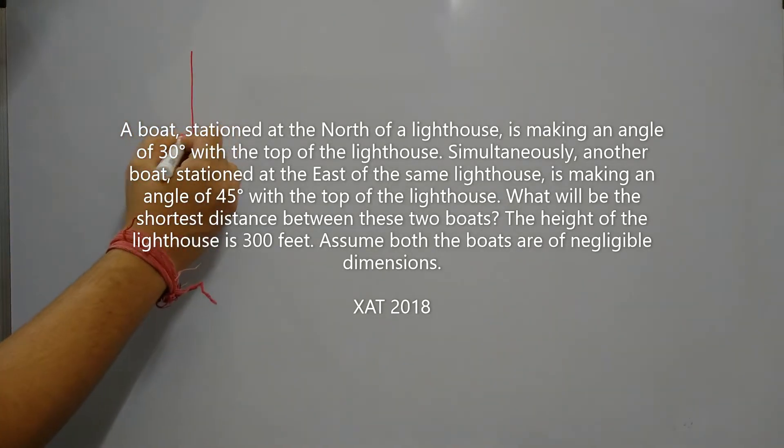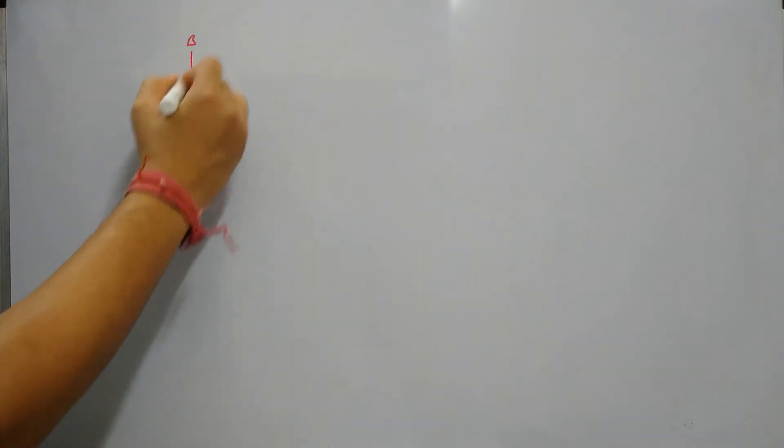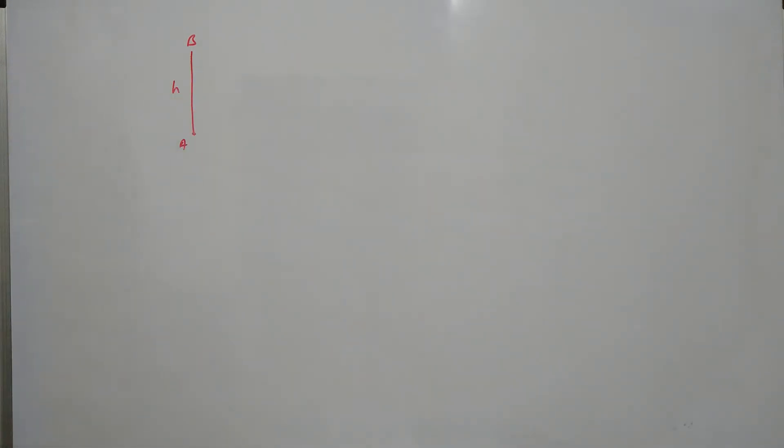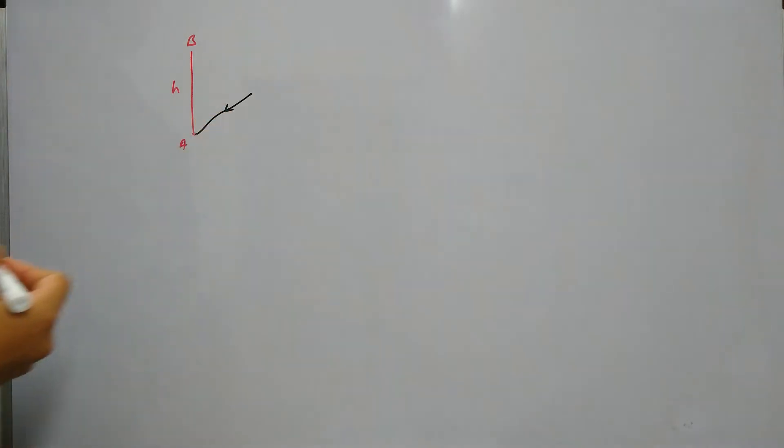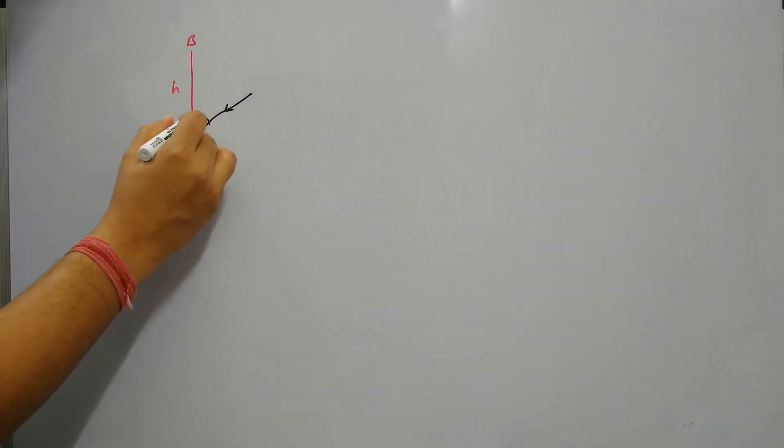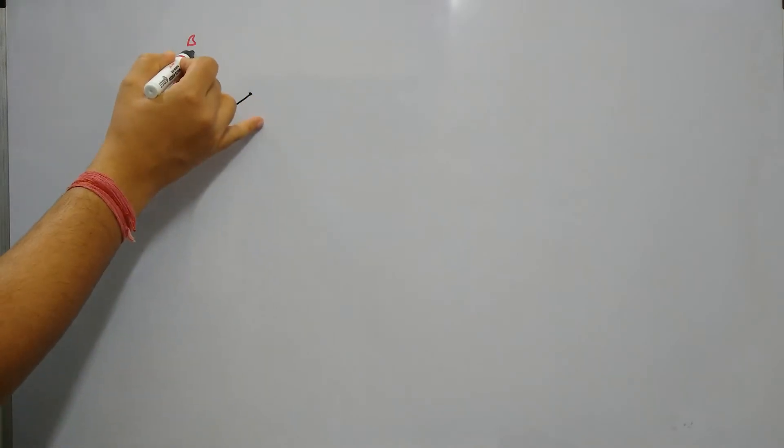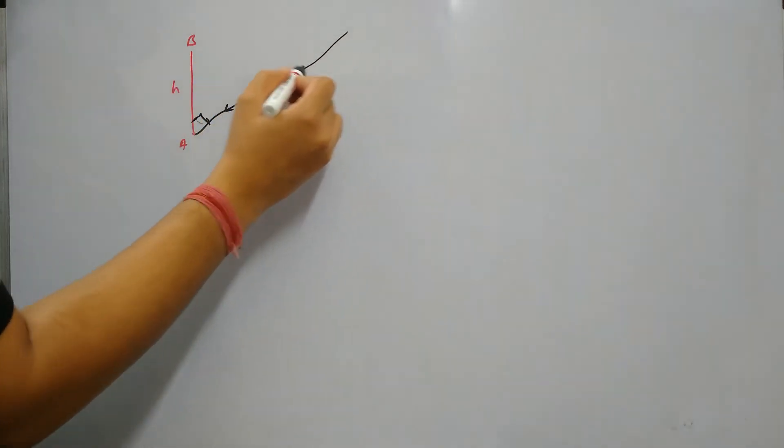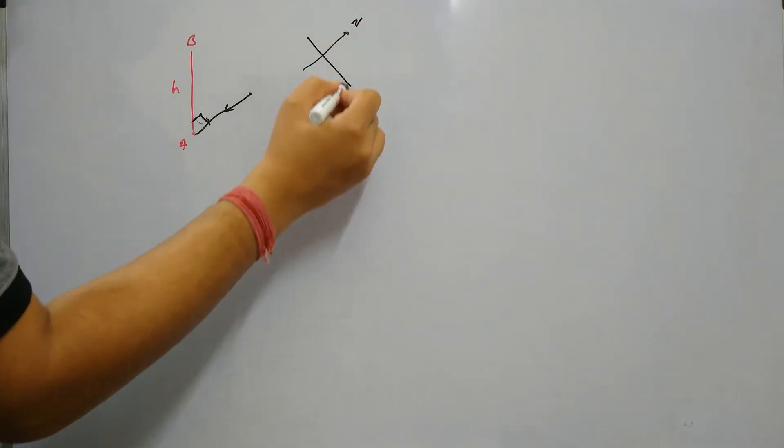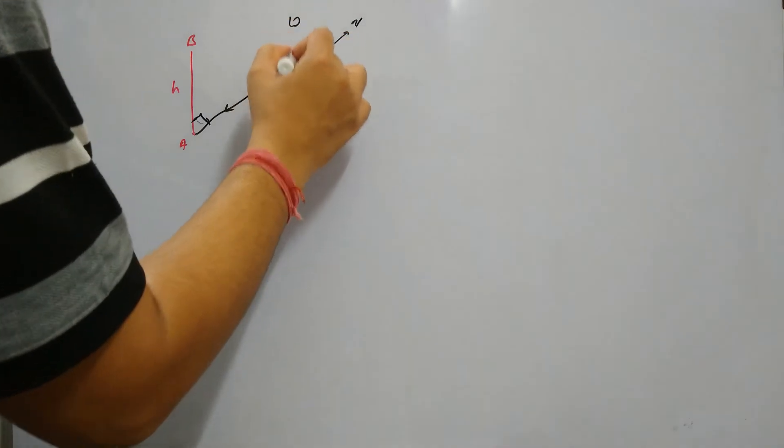So let's say we have a lighthouse A, B, given some height H, and there is a boat here to the north of the lighthouse which is approaching the base of the lighthouse A. Obviously this is 90 degrees, and we have another boat to the east of the lighthouse. So this is north, this is east, right, and south.